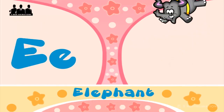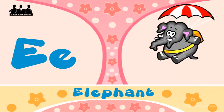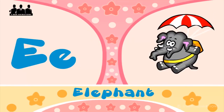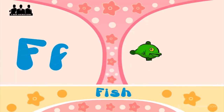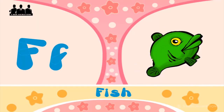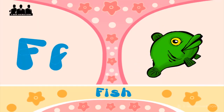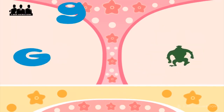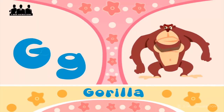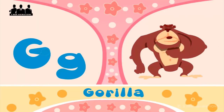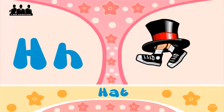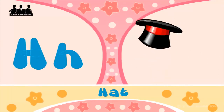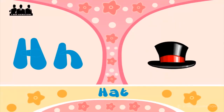E is for elephant, e-e-elephant. F is for fish, f-f-fish. G is for gorilla, g-g-gorilla. H is for hat, h-h-hat.